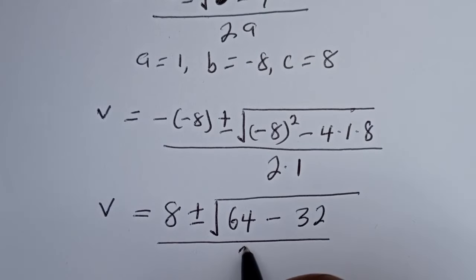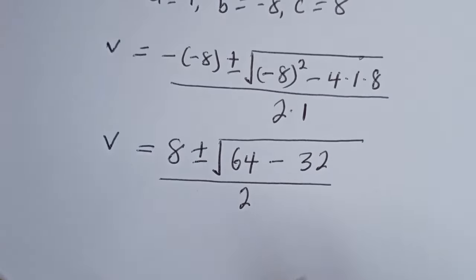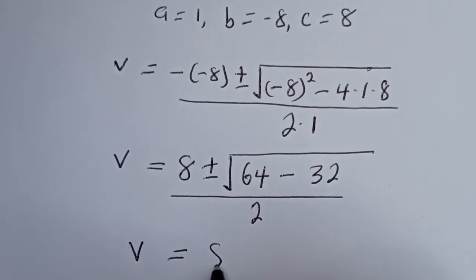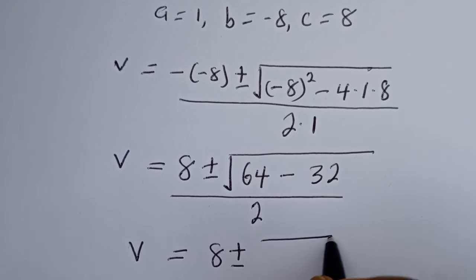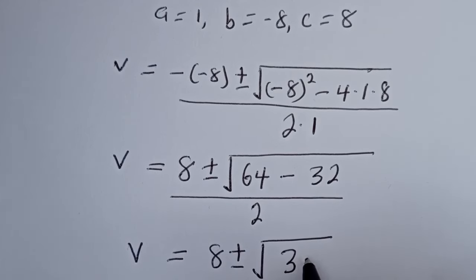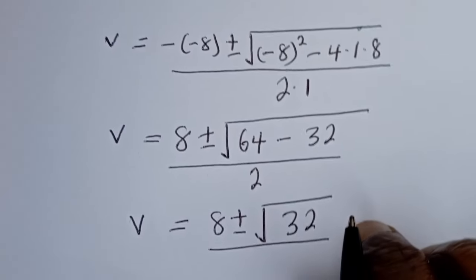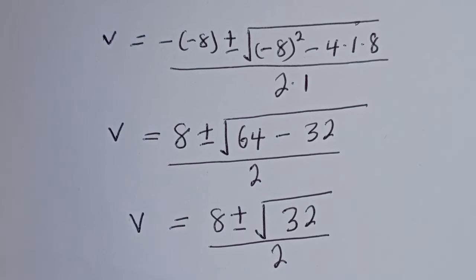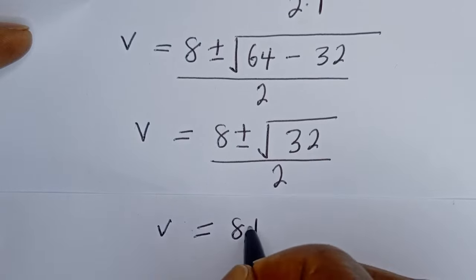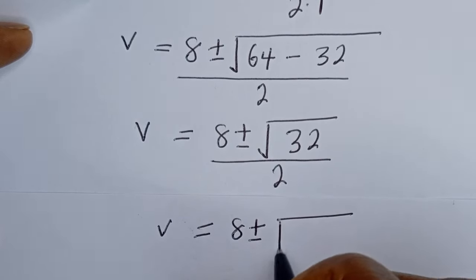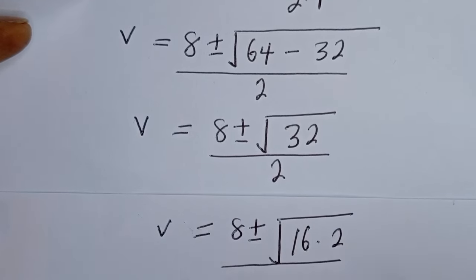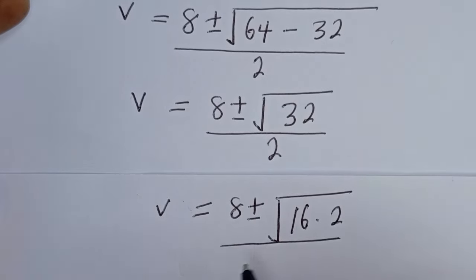This gives us v equal to 8 plus or minus square root of 64 minus 32, which is 32, over 2. Then v is equal to 8 plus or minus square root of 32, over 2. The square root of 32 can be written as square root of 16 multiplied by 2.